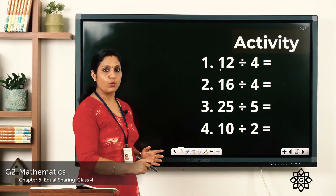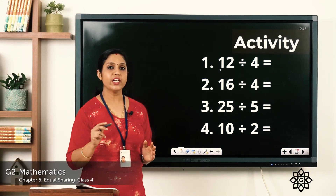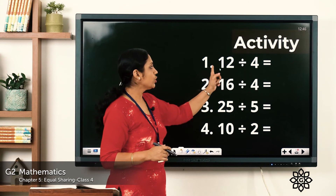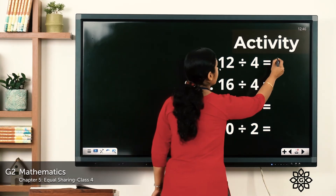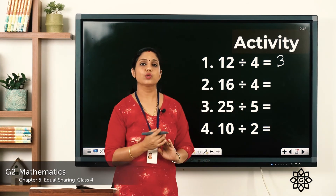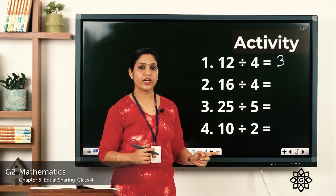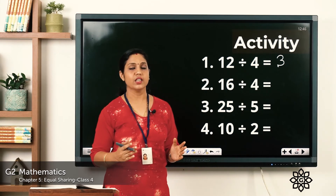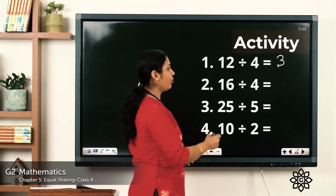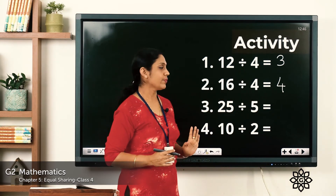Let's check the answers. First: 12 divided by 4 — say the table of 4: 4 ones are 4, 4 twos are 8, 4 threes are 12 — so 4 into 3 is equal to 12, meaning 12 divided by 4 is equal to 3. Next: 16 divided by 4 — say the table of 4: 4 ones are 4, 4 twos are 8, 4 threes are 12, 4 fours are 16 — so 16 divided by 4 is equal to 4.